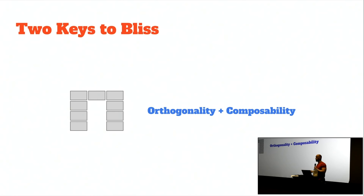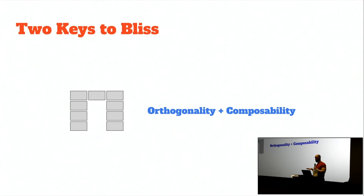I'll talk about what these things are — functional programmers love to talk about composability, but what does it actually mean? And orthogonality is also mentioned, but people seldom give it a meaning that gives you an intuition for what's going on. Tonight I'll give you some insight into these two ingredients for best-practice functional programming, and show how we can take designs that are not orthogonal or not composable and slowly tweak them until we arrive at something that feels right — where all the pieces fit together.